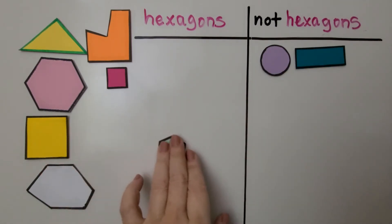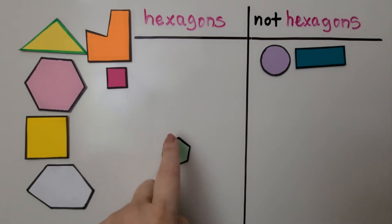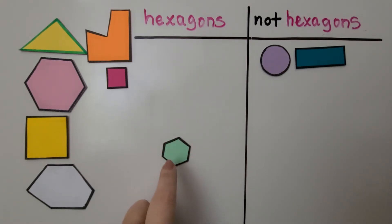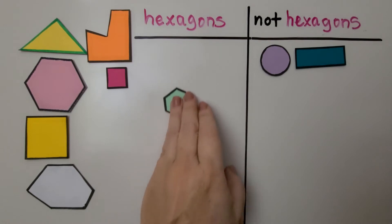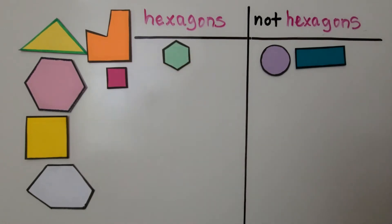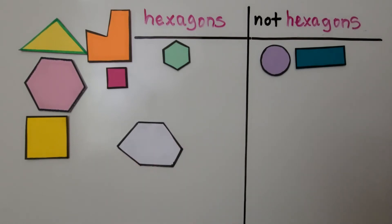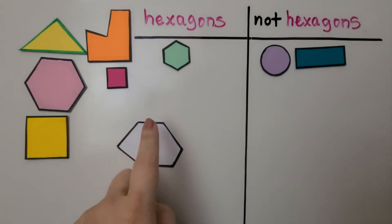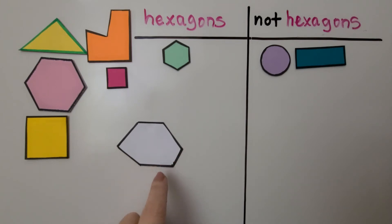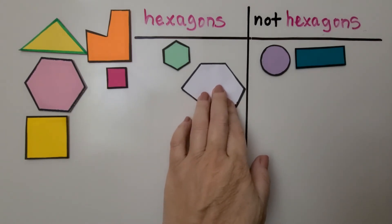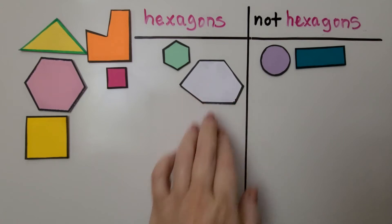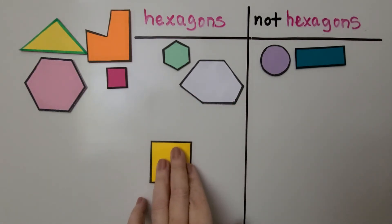What about this one? We can count the sides: one, two, three, four, five, six — yes, it's got six sides, that's a hexagon. What about this one? It's a very odd-looking shape. We can count the sides: one, two, three, four, five, six — six sides, yes, it's a hexagon.